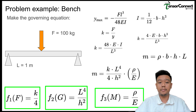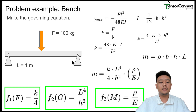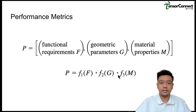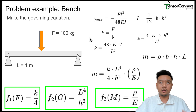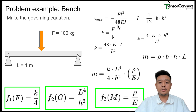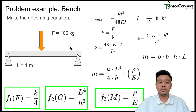Let's make a simple case study. Say we want to design a bench with a constrained length of one meter and a load of 100 kilograms from a person sitting on it. We construct our governing equation: we want to minimize the deflection or the mass of the bench material to reduce cost. The governing equation is y = FL³ / (48EI), which is the deflection related to force and material properties, where E is the modulus of elasticity and I is the second moment of area.